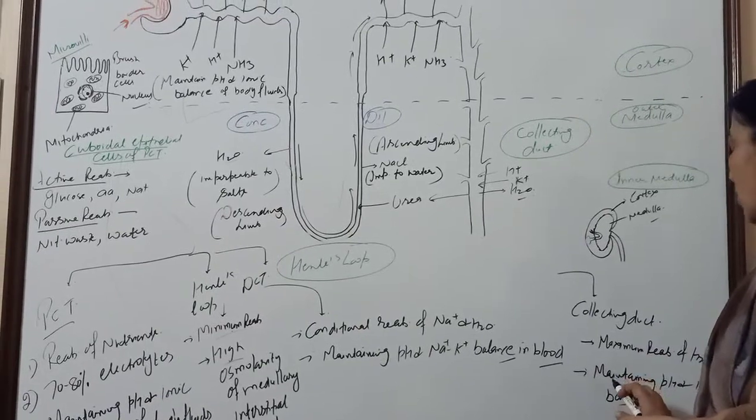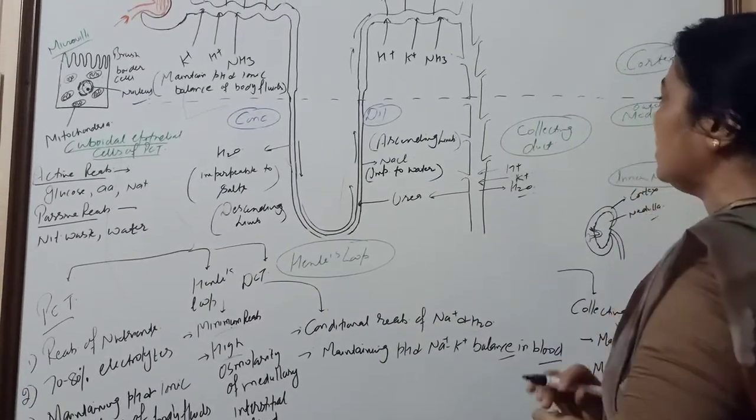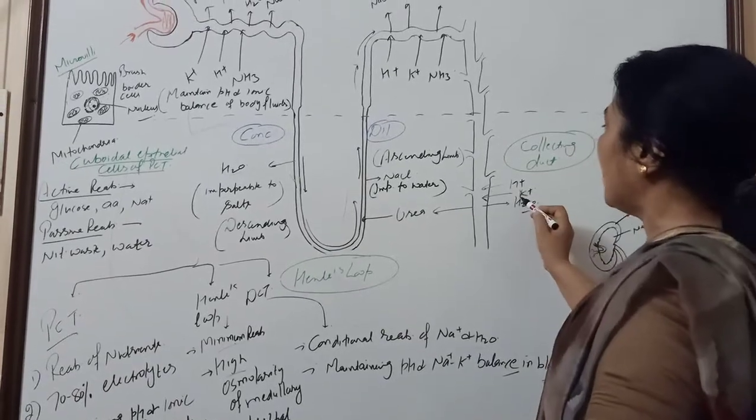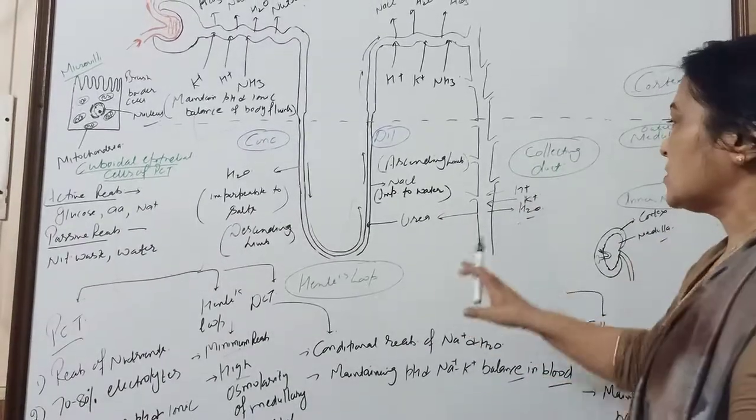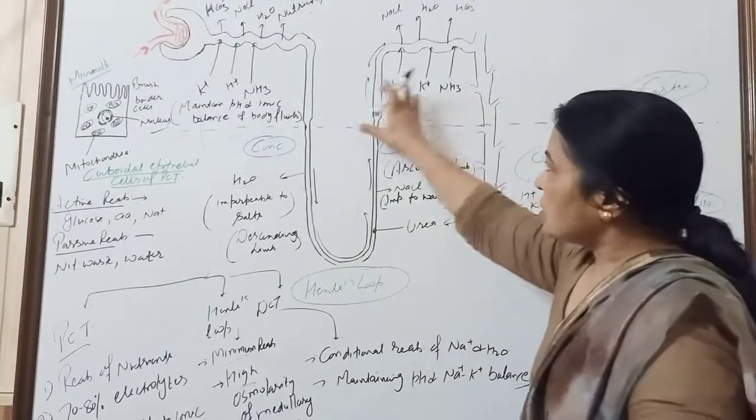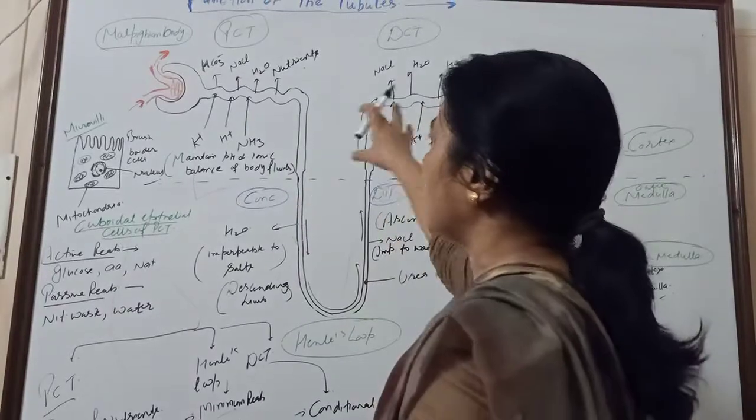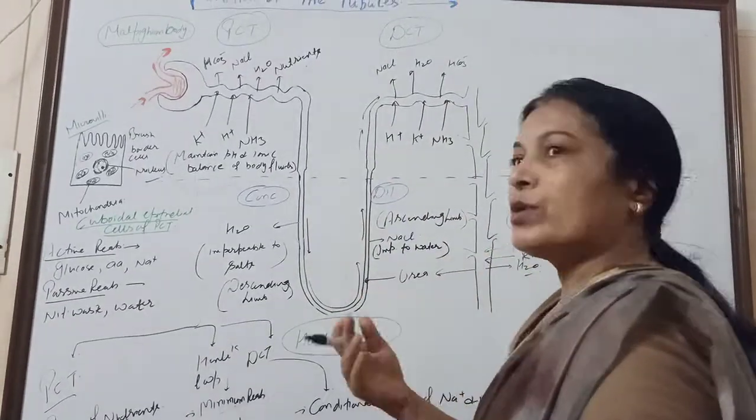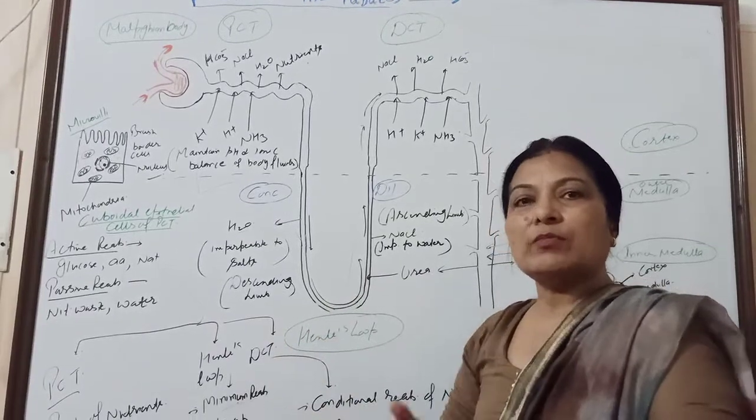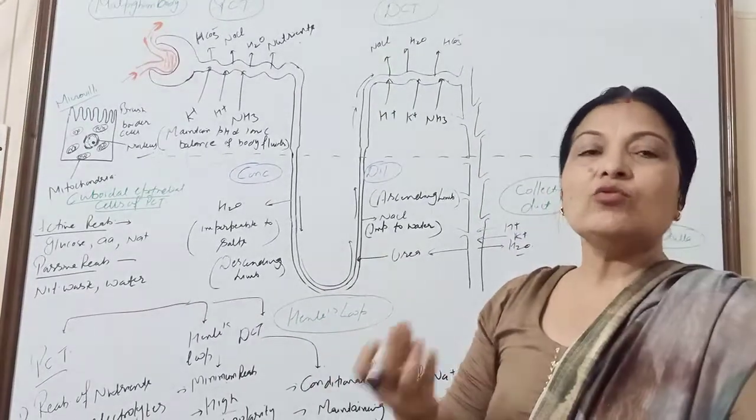Which helps to maintain pH and ionic balance, which can be by secreting hydrogen ion and potassium ion. These are the four functions we have discussed. The next video, we will discuss the counter current mechanism, a unique mechanism which can concentrate urine.